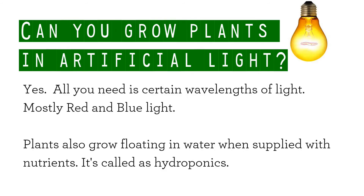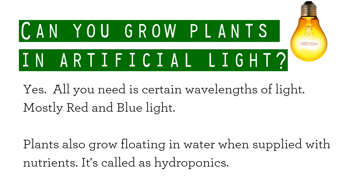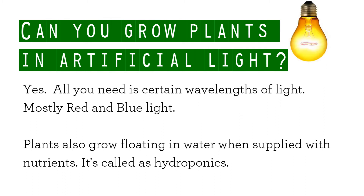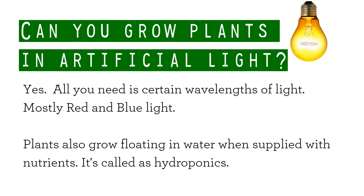Can you grow plants in artificial light? Yes! All you need is certain wavelengths of light — mostly red and blue light. Plants can also grow floating in water when supplied with nutrients. It's called hydroponics.